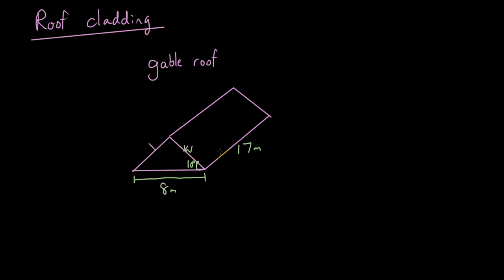Width of the rectangle, right? Because the area of the rectangle is length times width, but we don't have the width. So how do we calculate it? Let's split this triangle into half so that we will have half the width, which is 4 meters. We can do that with a gable roof because we know that this is an isosceles triangle. If it's not an isosceles triangle, you can't just split it into half.